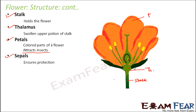Sepals are green colored leaf-like structures, and they ensure protection to the bud. A flower initially forms as a bud. Just as a newborn baby needs protection and care from its mother until it grows and becomes independent, similarly the sepals take care of the bud. You can see that the bud is completely covered by the sepals, which ensure full protection of the bud.